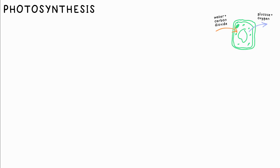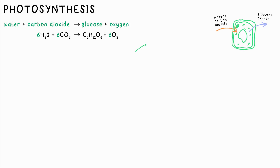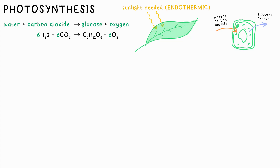Photosynthesis happens in chlorophyll in chloroplasts in plant cells to provide food for a plant. Here's the word and balanced chemical equation for it. As energy is needed in the form of light to make this reaction happen, this is an endothermic reaction.